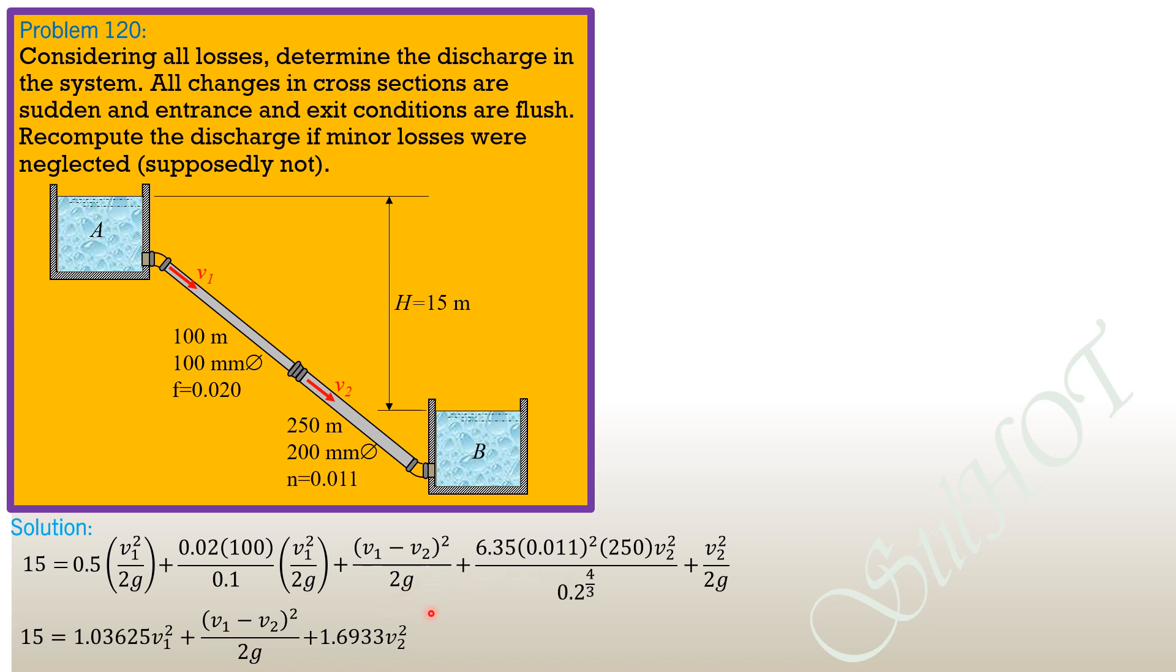By continuity equation, pi over 4 diameter of pipe 1 square times V1 equals pi over 4 diameter of pipe 2 square times V2. So pi over 4 will be canceled. So 100 mm square, or 100 square times V1 equals 200 square times V2. So expressing V1 in terms of V2, V1 is 4 times V2.